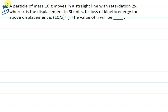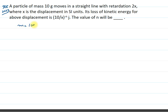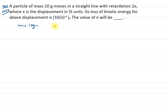Hello students, good morning. I'm going to discuss a JEE Main problem. A particle of mass 10 grams moves in a straight line with retardation. The retardation is given as -2x, where the negative sign indicates retardation and x is the displacement in SI units. The loss of kinetic energy for the above displacement is given as 10 upon x raised to power minus n joules. Find the value of n.